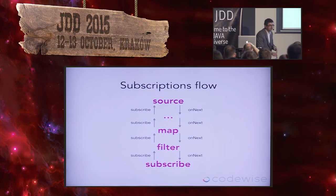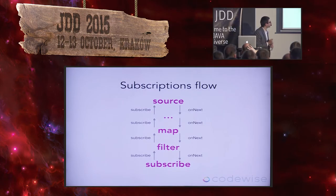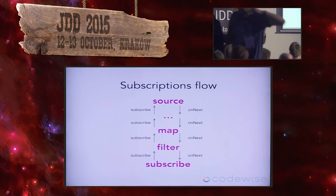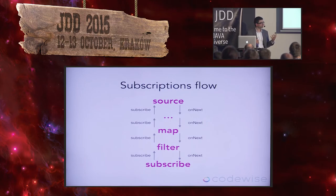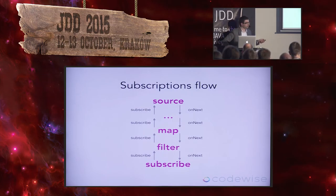Right now we will try to implement our own source to produce those tweets instead of relying on 'just'. First, some information about how subscription works regarding threads. Right now starting the application there is only one main thread. The main thread creates the DSL and calls subscribe. The subscribe method propagates subscription through each operator back to the source.